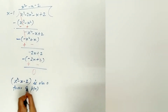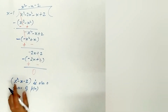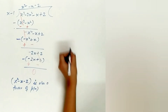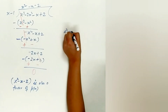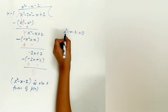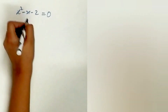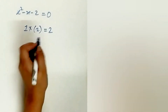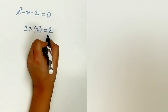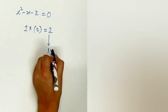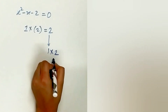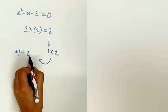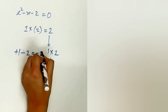The fourth step is to use the splitting the middle term method to find the factors of x square minus x minus 2. Multiply the coefficient of x square and the constant — do not consider the sign. Find the factors of the constant and arrange them in such a manner to get the coefficient of x. Plus 1 minus 2 is equal to minus 1.